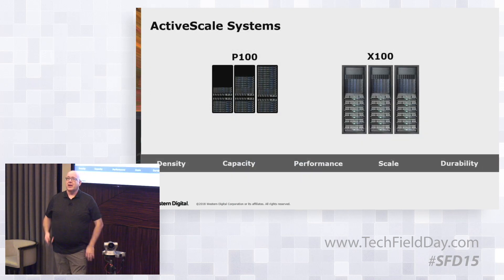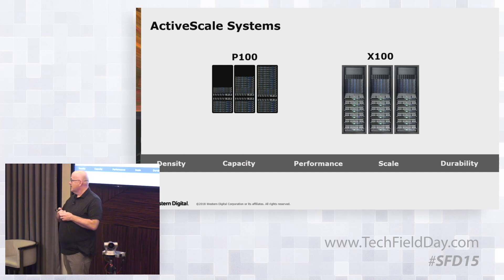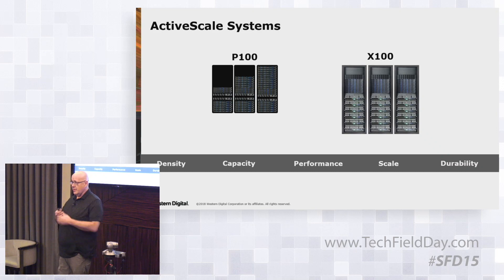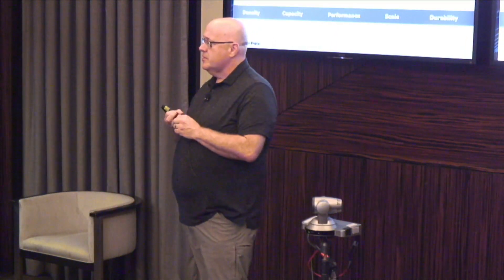Let's talk a little bit about the hardware we have available. There are two sets of hardware: the P100 and the X100. The replication is asynchronous — there are no current plans to do synchronous replication. Synchronous replication across geos is complicated. The data is not compressed or deduplicated, but it can be encrypted both in flight and at rest; we don't do compression or deduplication natively inside ActiveScale.